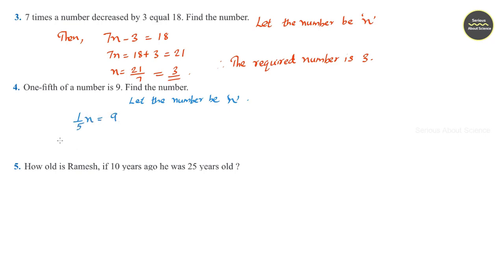Here, we can directly multiply both sides by 5. So, answer becomes N is equal to 9 into 5 which is equal to 45. Therefore, the required number is 45.